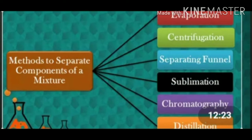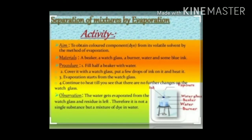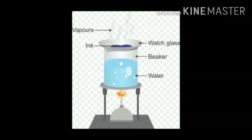Method 1: Obtaining dye from blue or black ink. Take a beaker, a watch glass that can rest on the mouth of the beaker, a burner, and some blue ink. Fill half the beaker with water, place the watch glass on the mouth of the beaker, and put a few drops of ink on the watch glass. Start heating the beaker — we should not heat the ink directly, hence this arrangement. Observe that evaporation takes place from the watch glass.